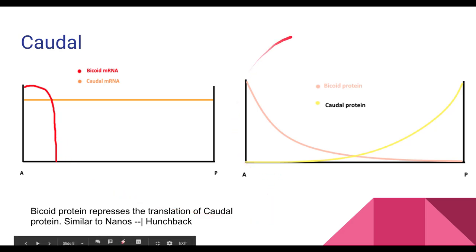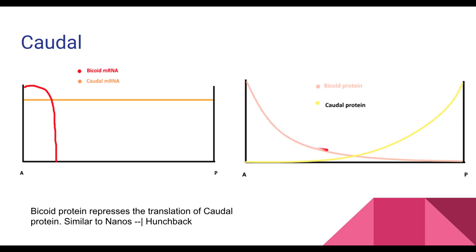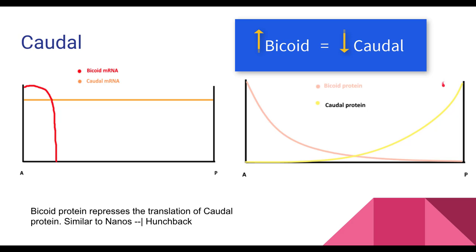Moving on to protein expression: bicoid is shown in pink and caudal protein in yellow. Bicoid is translated into protein and diffuses throughout the embryo, giving high levels at the anterior end and low levels at the posterior end. Caudal has consistent mRNA levels throughout, but it's repressed by bicoid. Where there's basically no bicoid at the posterior region, caudal protein levels are quite high. As caudal moves into the center and encounters more bicoid, it gets repressed — so by the time you reach the anterior region, you're making essentially no caudal protein at all.